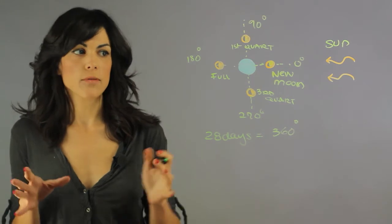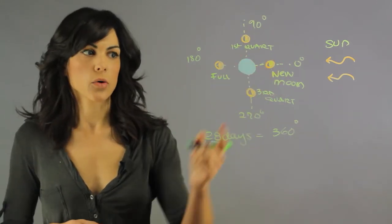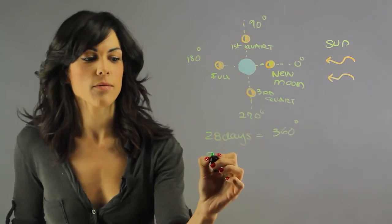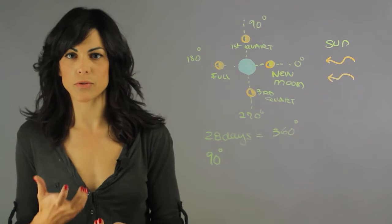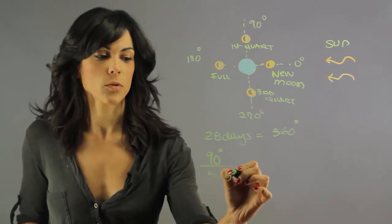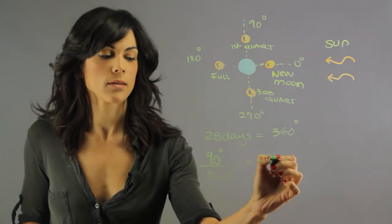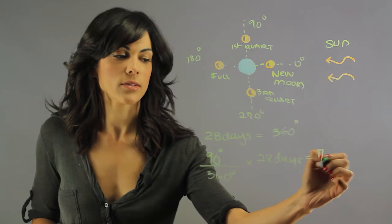Now, it travels from 0 to 90 from new moon to first quarter. So it travels 90 degrees. So if we want to find out how many days is 90 degrees, we can multiply it by our conversion factor. So if we divide this by 360 degrees and multiply it by 28 days, we get that is about seven days.